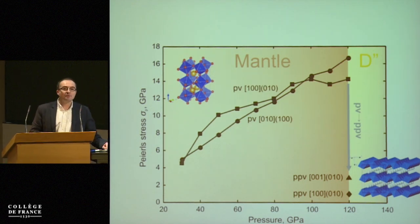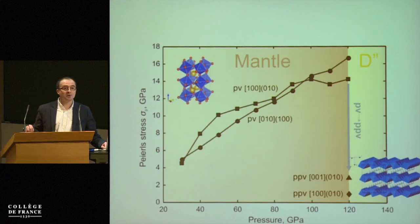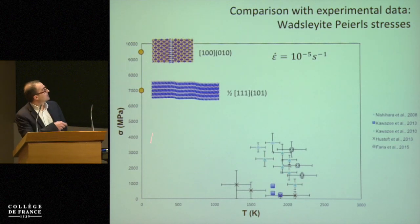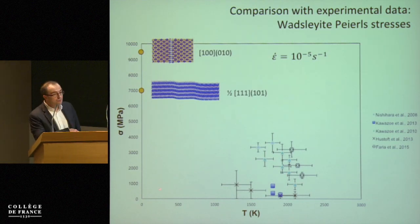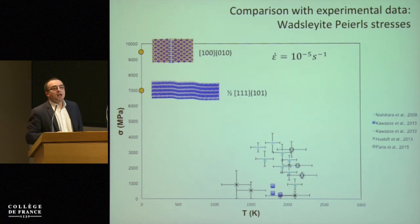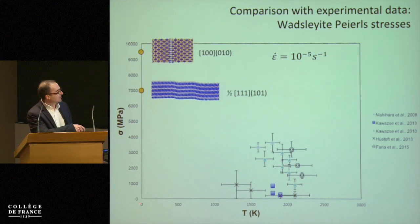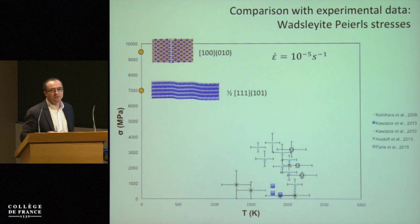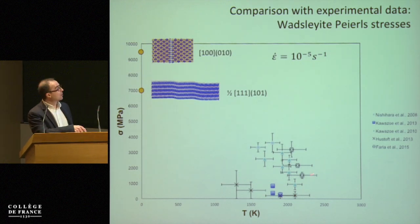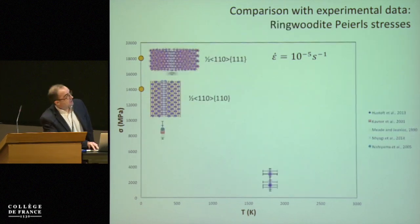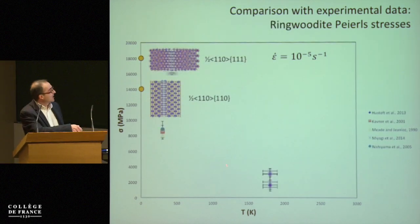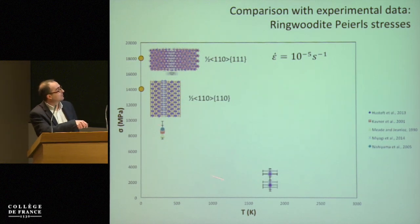A key question is how these Peierls stresses compare with experimental data on flow stress. On this graph, flow stress is plotted as a function of temperature with all available experimental data. It is difficult to directly compare because our calculations are done without temperature. What we can say is that we are at least in the right trend and have the right order of magnitude. The same conclusion holds for ringwoodite, where our Peierls stresses are in a consistent range with the experimental data.